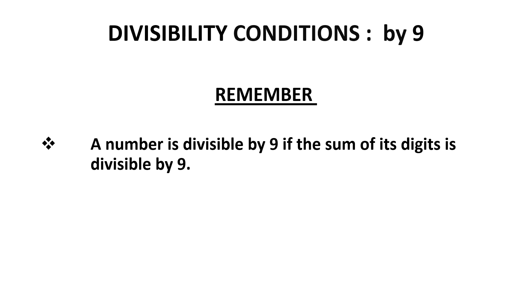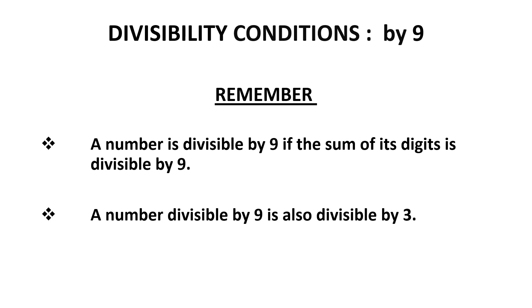Let us remember what we have learned today. A number is divisible by 9 if the sum of its digits is divisible by 9. Also, if a number is divisible by 9, it will also be divisible by 3. So without performing actual division, we are able to find out if a number is divisible by 9.